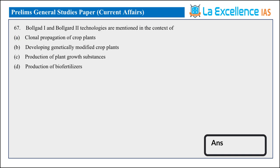Next is Bollgard 1 and Bollgard 2. These two technologies are mentioned in the context of BT cotton. BT cotton means it is related to genetically modified crop plants. So answer is B — 67th answer is B.